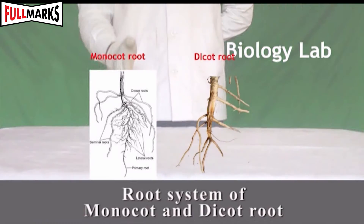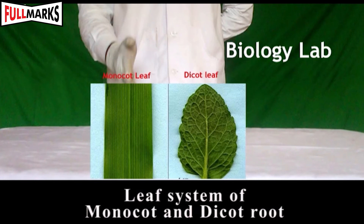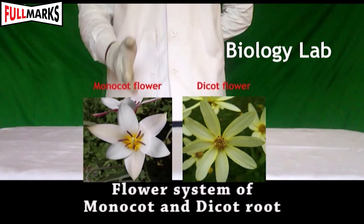Observe the root system of peas and the type of venation in leaves. Record your observations. Observe the flowers carefully — note the number of sepals, petals, and the type of pollens in the flower.